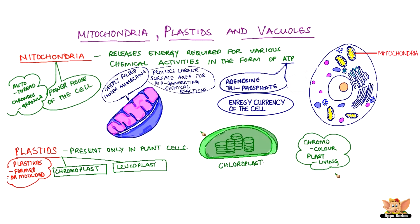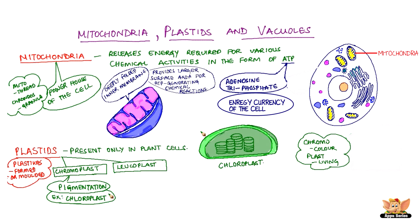Chromo means color and plast means living. Plastids that are green in color are chloroplasts, which contain chlorophyll pigments. Fruits and flowers get their color from different chromoplasts.